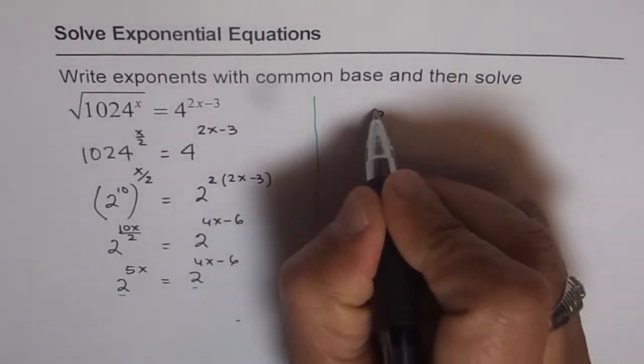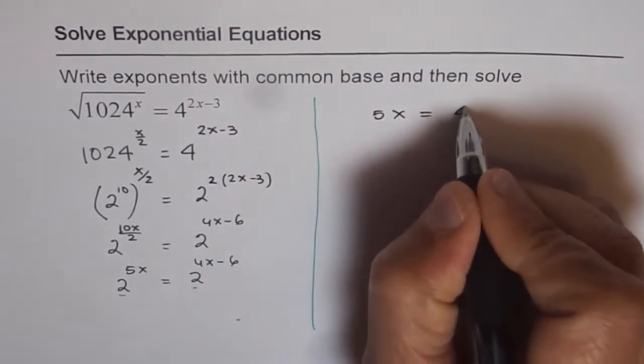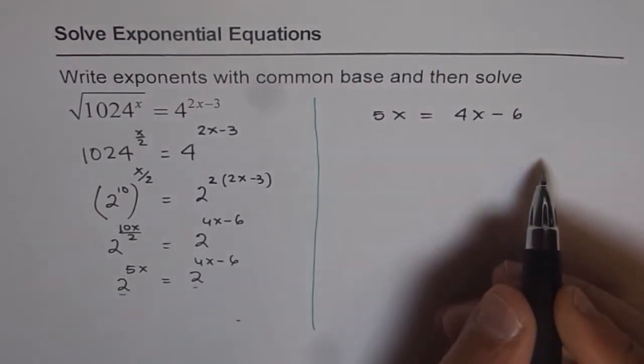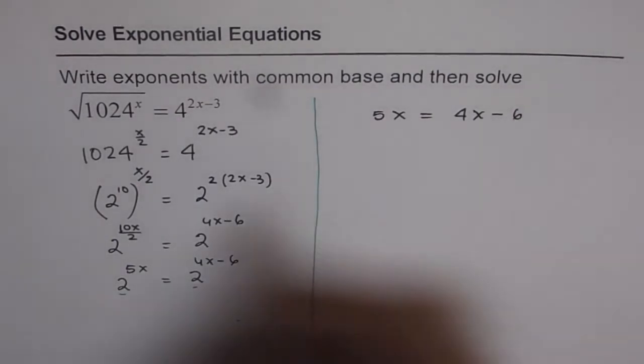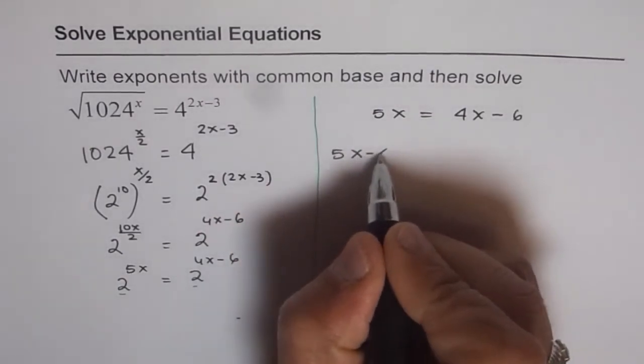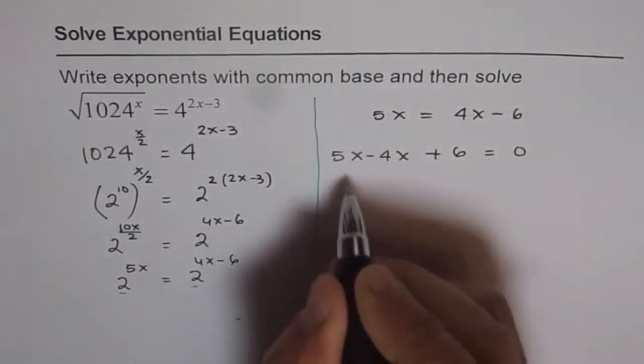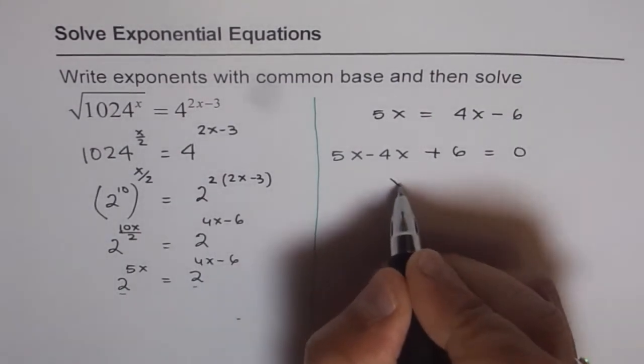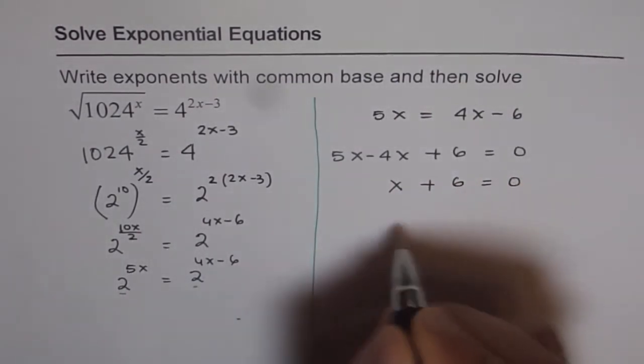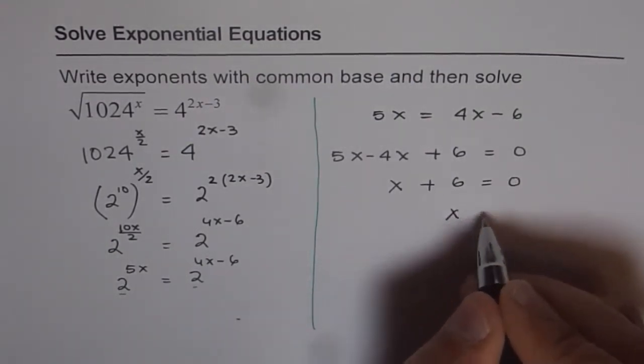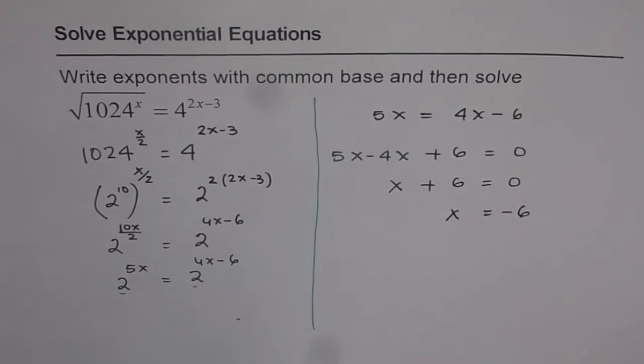So we have 5x equals 4x minus 6. This is a linear equation which can be solved. Let's bring all terms to the left side: 5x minus 4x plus 6 equals 0. This simplifies to x plus 6 equals 0. Taking away 6 from both sides, we get x equals minus 6 as our solution. That is how we can solve these equations.